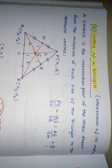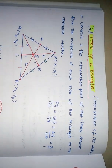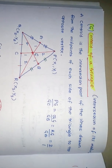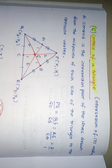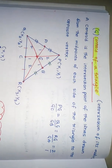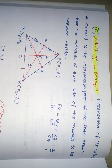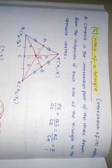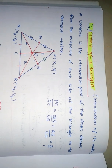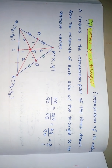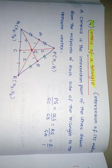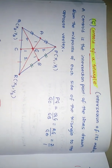Welcome to GPSTR CTT channel. Friends, in this video we are discussing how to find the coordinates when three vertices are given for centroid, orthocenter and circumcenter. First we will see what is the centroid of a triangle.